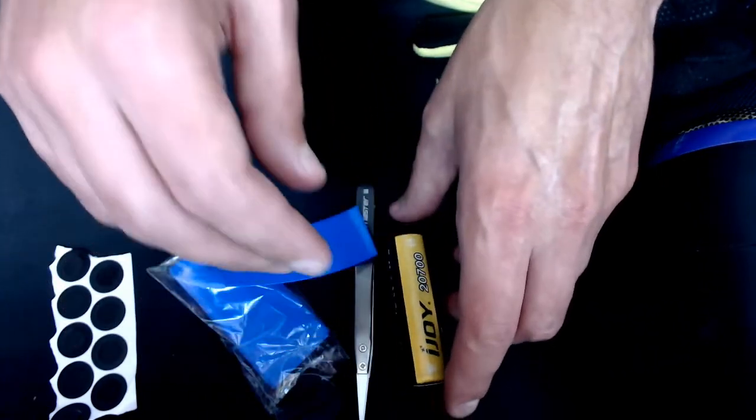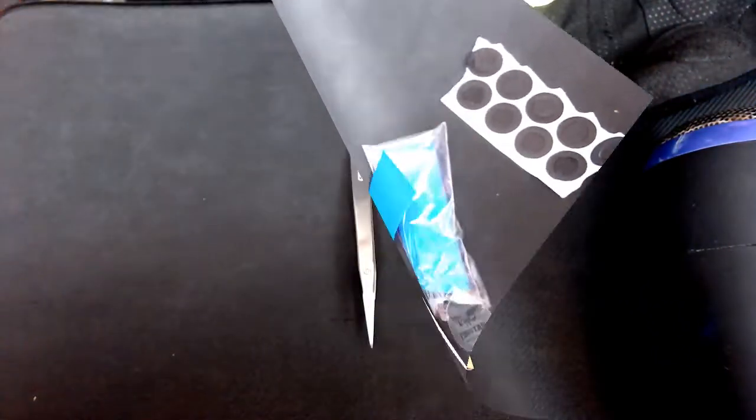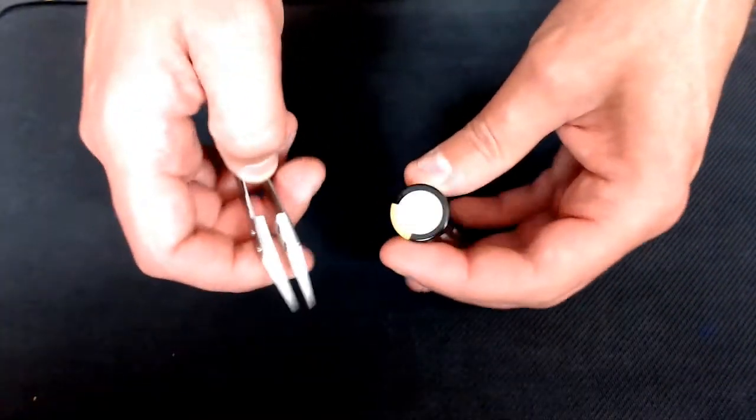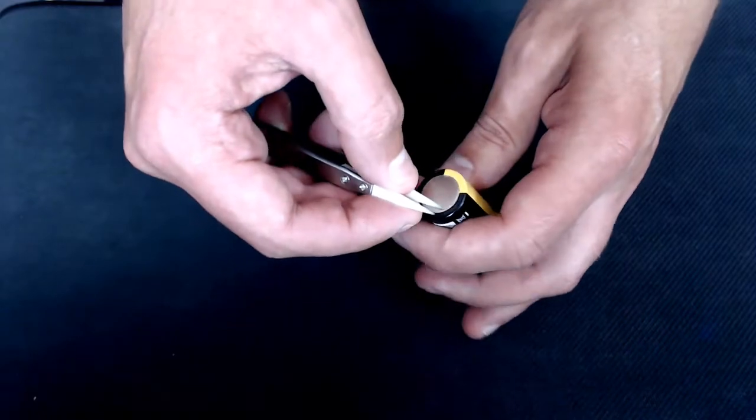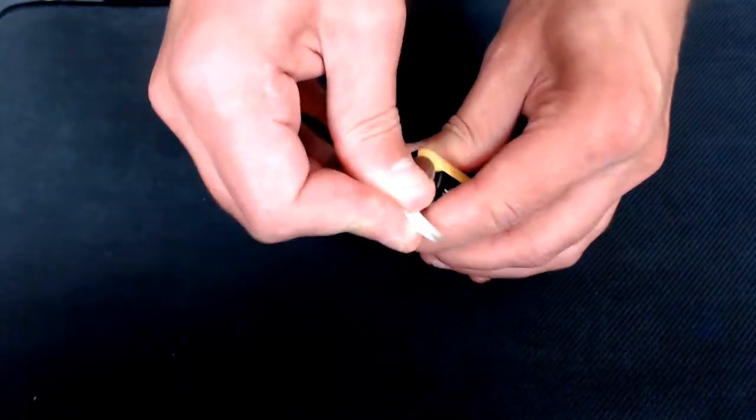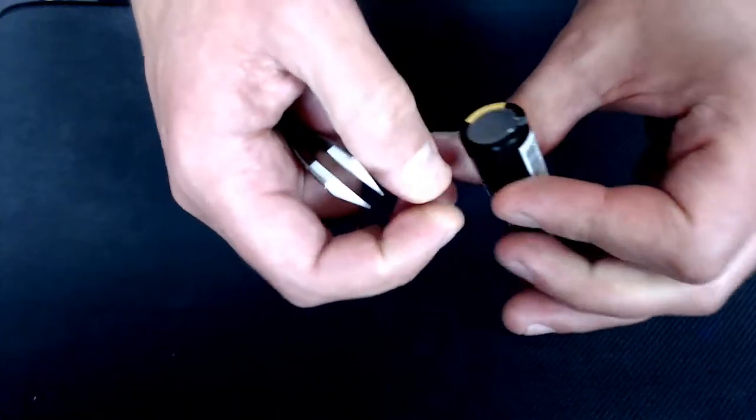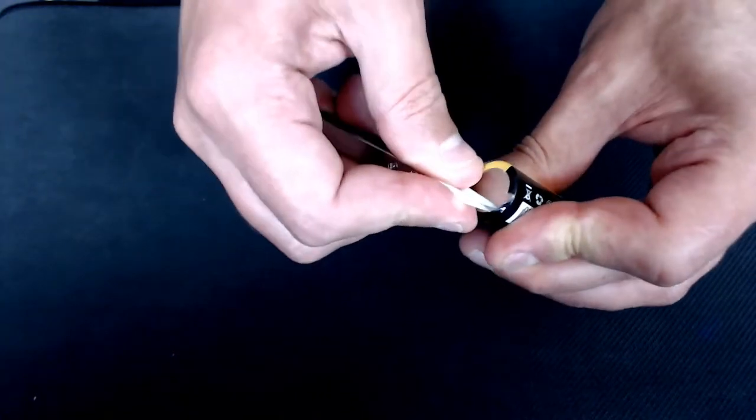Right, so here we go then. Get your ceramic tweezers - I advise using ceramic ones, not anything metal - and you just hook it underneath and then basically just peel the old wrapper away.